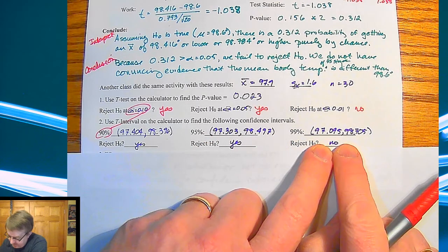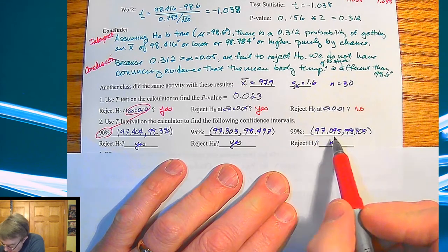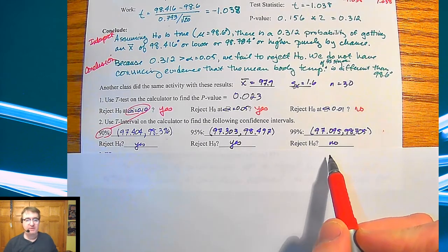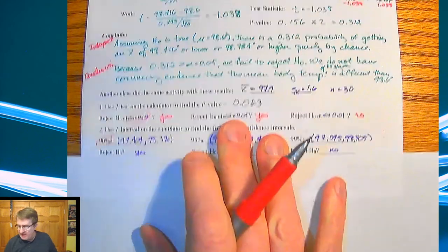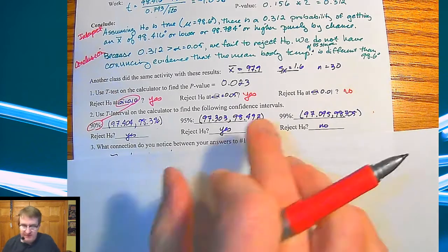And then over here, same idea, 99%. Where's 97.9? 97.9 would be up over here. So can we reject the null hypothesis? No. And so what ends up happening is that these two-sided tests effectively are acting like a confidence interval.